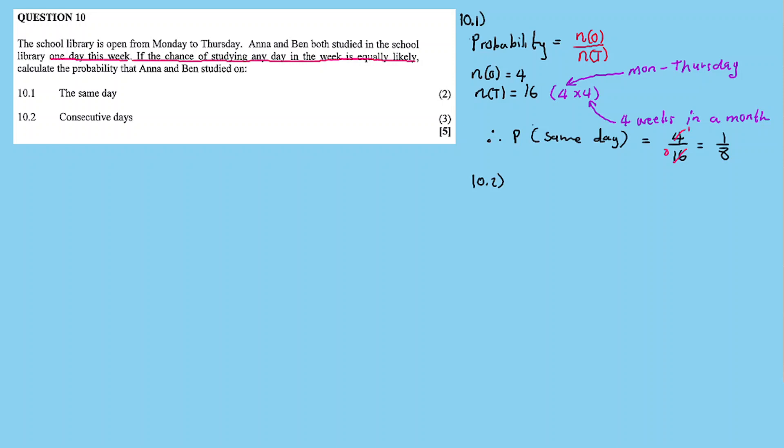consecutive days. So the probability of consecutive days is equal to what? Monday, Tuesday, Wednesday, Thursday. So if we take consecutive days, one-two-three is consecutive days. One-two is also consecutive days.